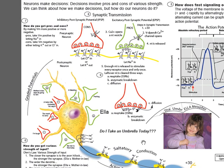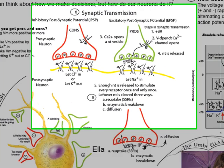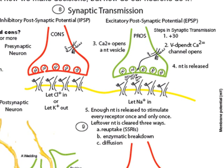The next thing to talk about is synaptic transmission. So if you've got these chloride channels opening, these potassium channels opening in the postsynaptic neuron, or these sodium channels opening up in the postsynaptic neuron, how did that signal get to them to open up?